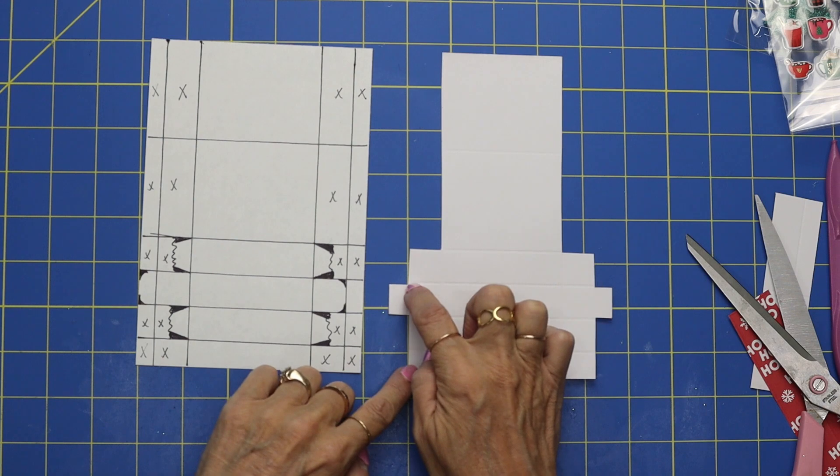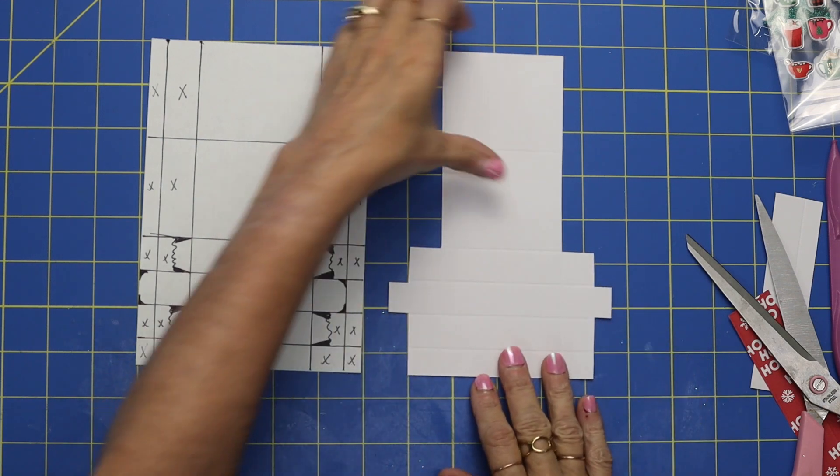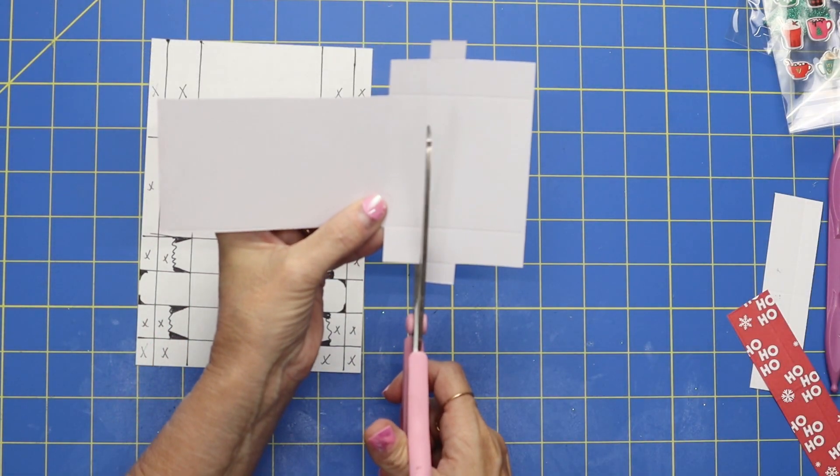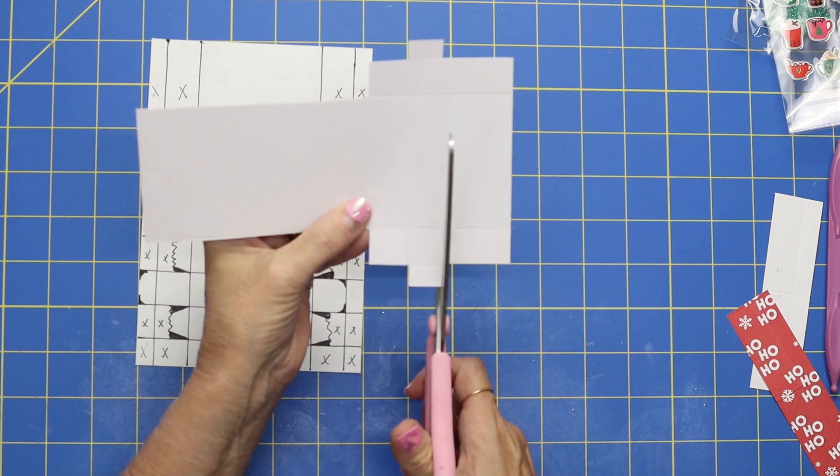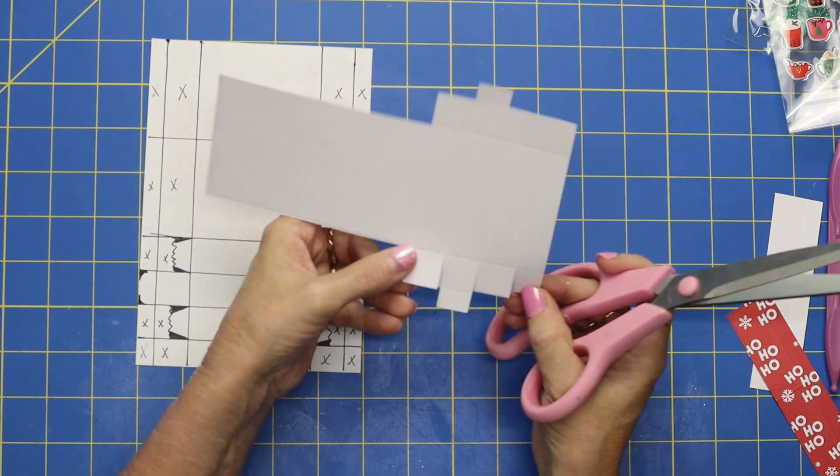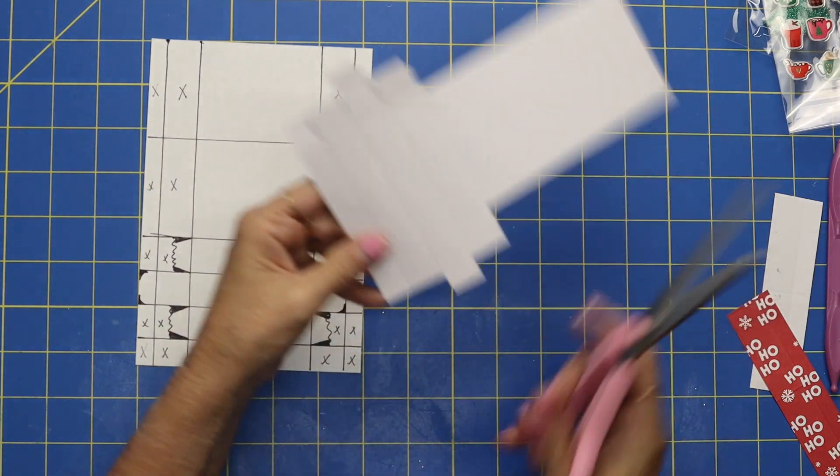So we've cut out this square right here. Now we're going to cut up on this slit right here. That's going to help us so that our box folds. So kind of watch as we do these. On these slits we're going to cut up on all of our slits. Do you see how that is right there?